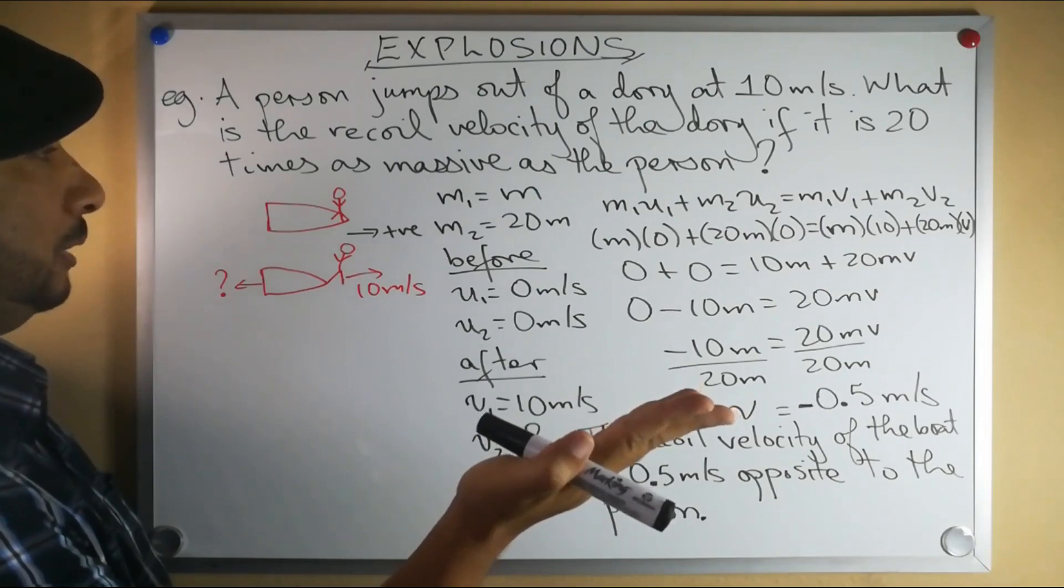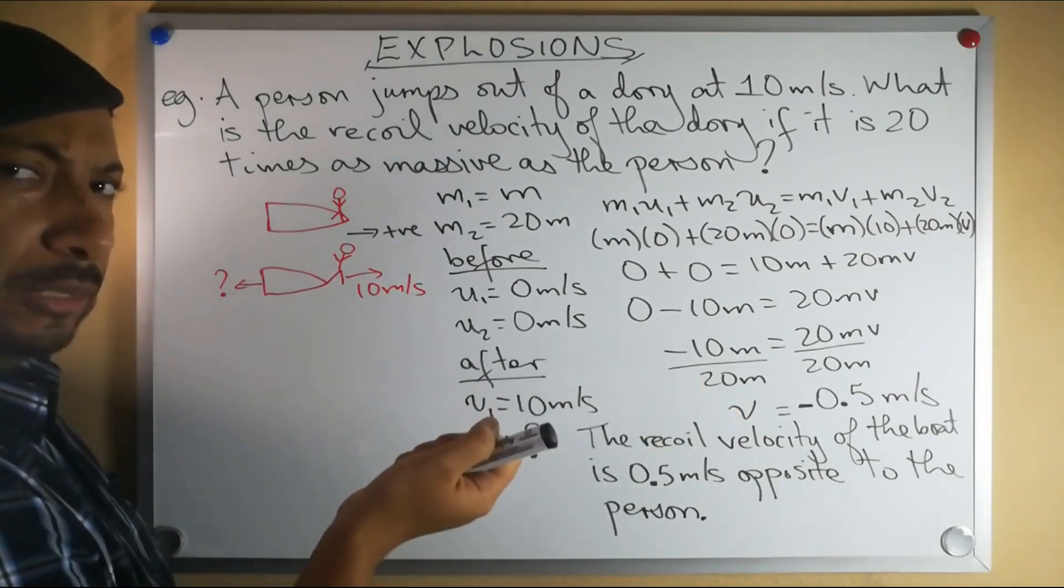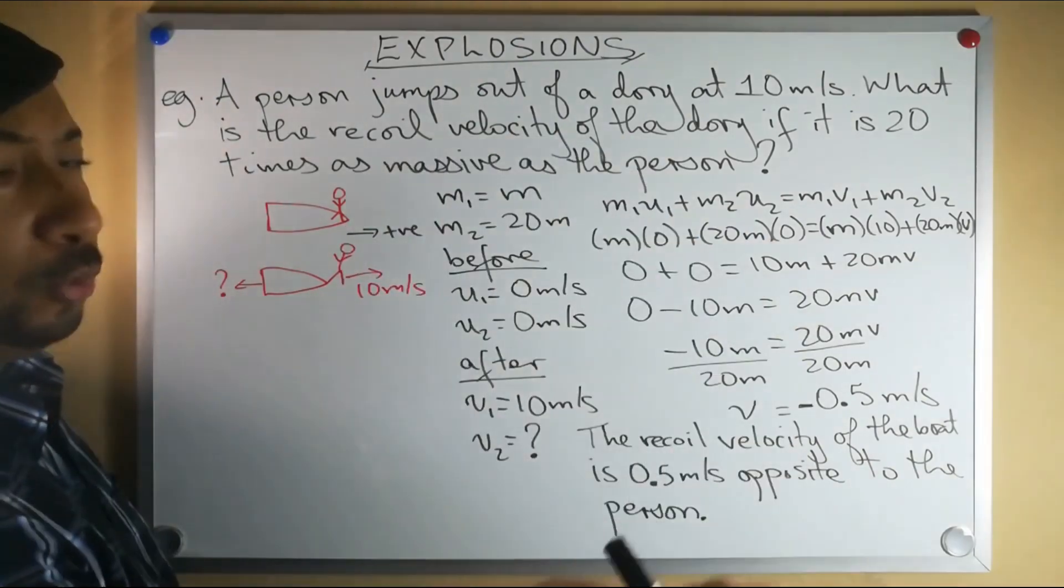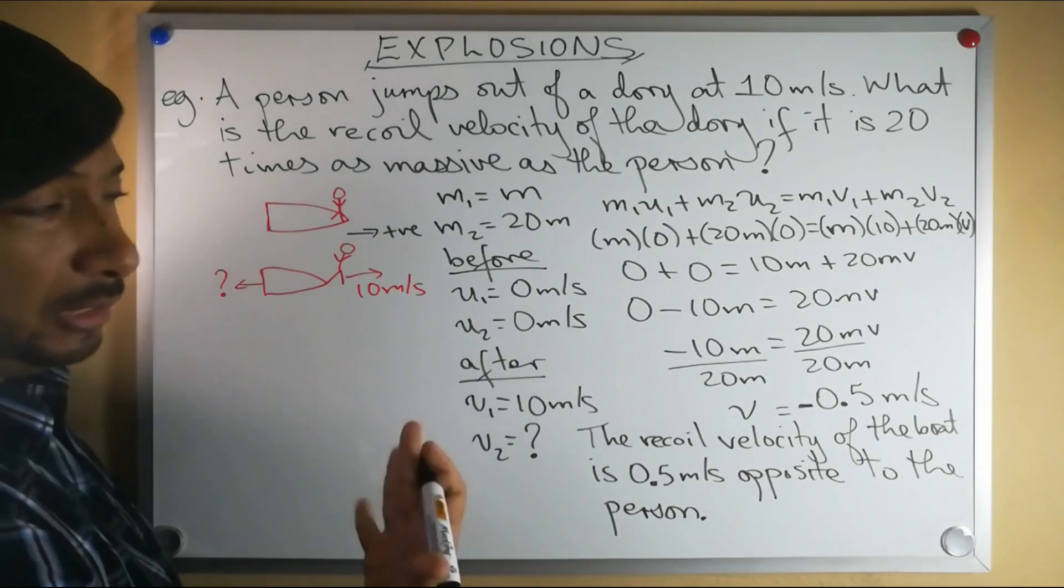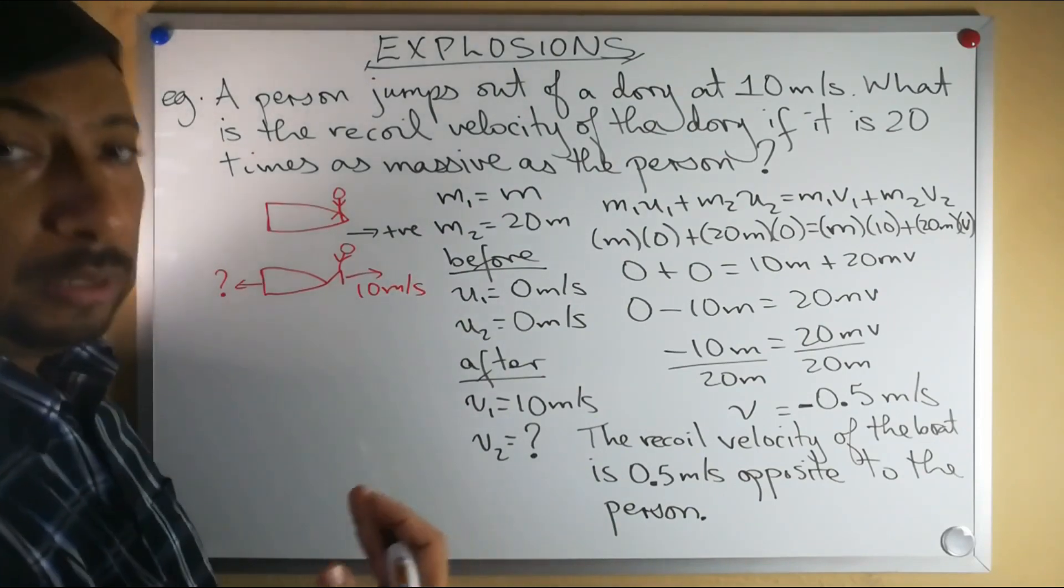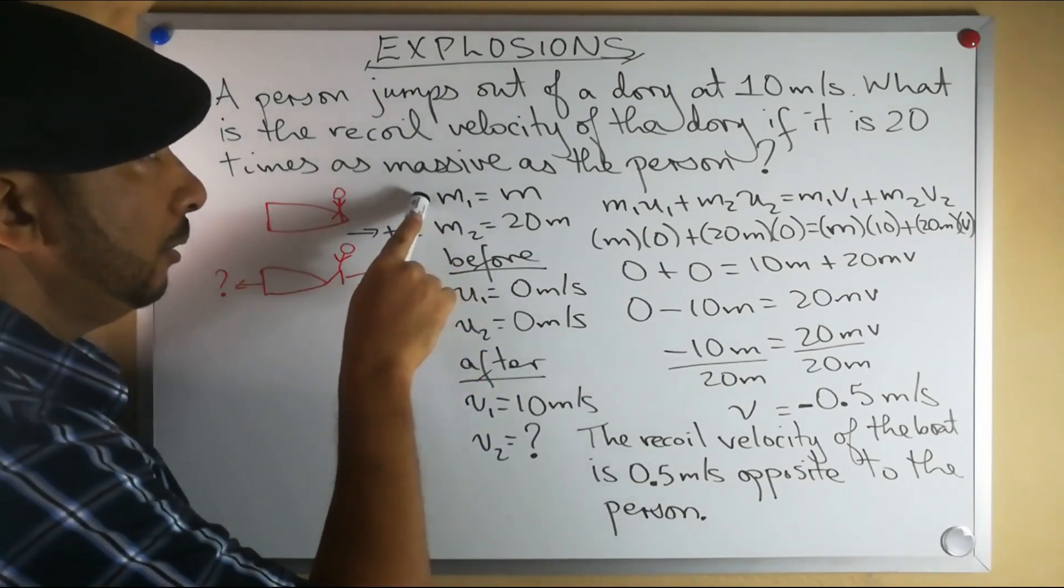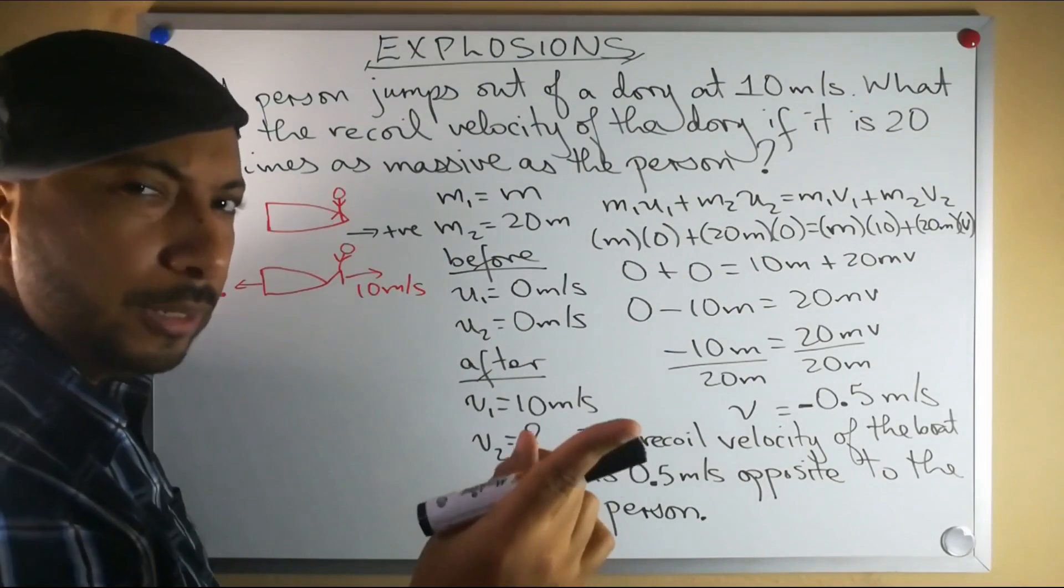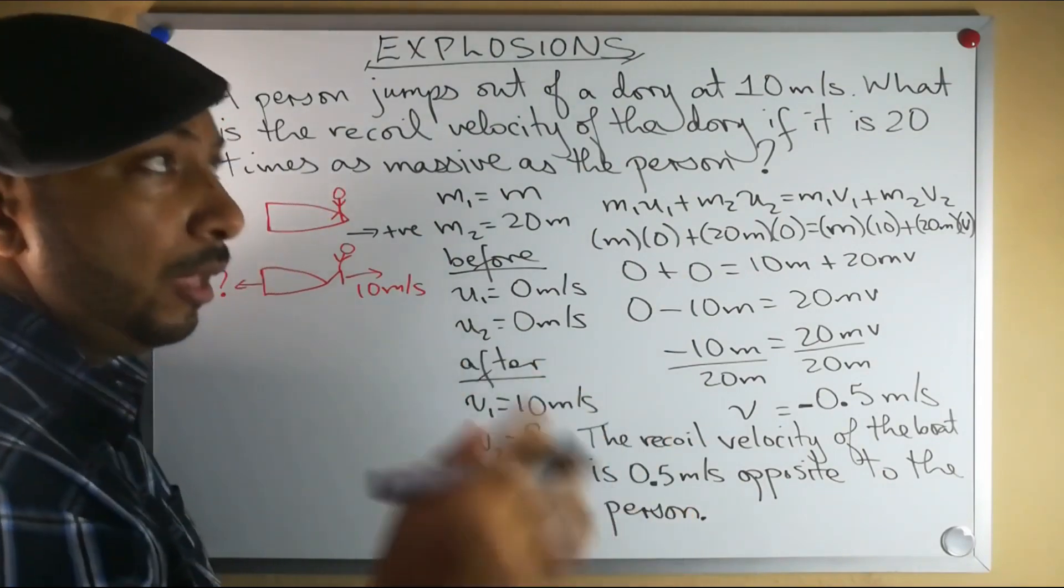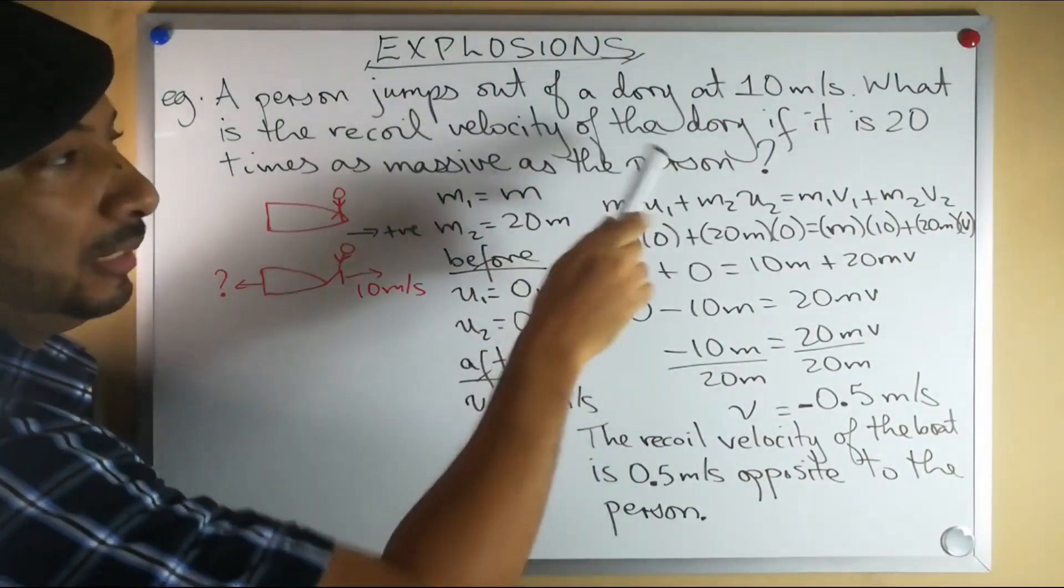And then the dory goes at some velocity. We don't really know what direction because it just said the person jumps out of the dory. But based on our diagram, let's say that the right direction is positive. Now we proceed to identify our givens. What is the mass of the person? Well, the question unfortunately does not say, however that's not really necessary because the question does tell us that the dory is 20 times as massive as the person.